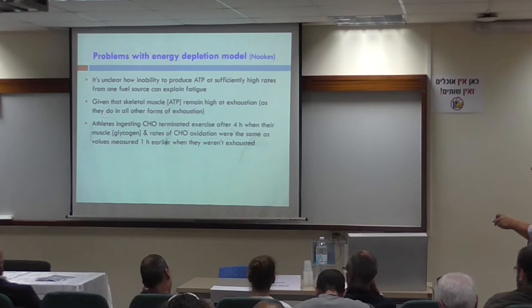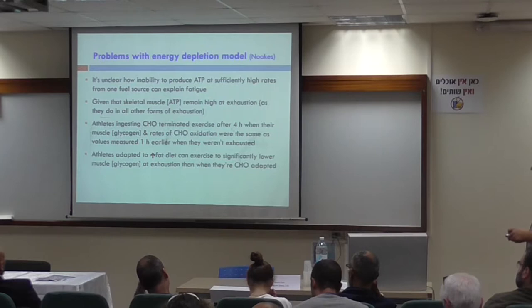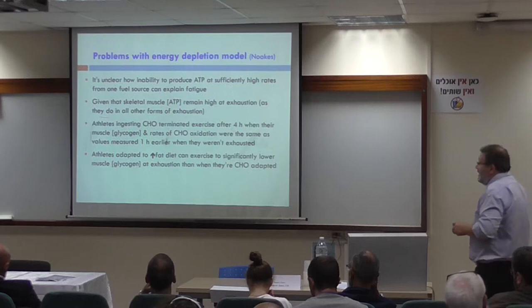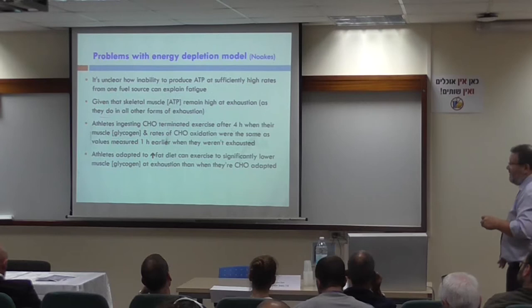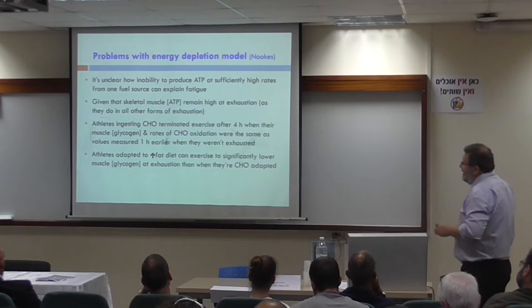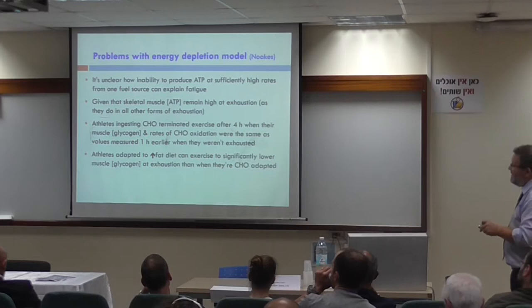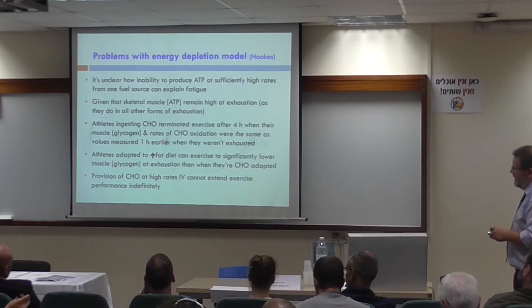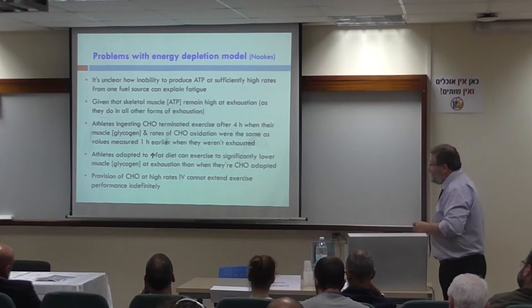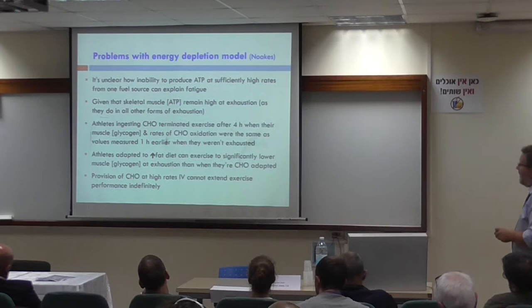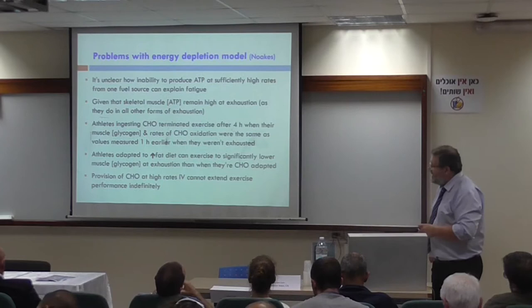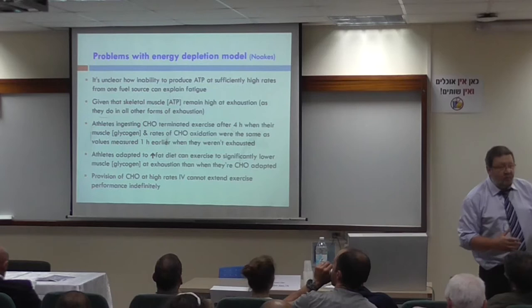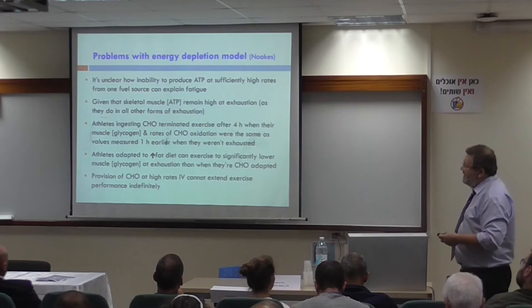Athletes adapted to a high-fat diet can exercise to significantly lower muscle glycogen levels before exhausting than those who are carbohydrate-adapted — different fatigue levels with different energy sources, incompatible with the depletion theory. Furthermore, providing intravenous carbohydrate at high rates during exercise was not able to extend exercise performance indefinitely. If the depletion theory were correct, supplying sufficient carbohydrate should prevent fatigue indefinitely — yet eventually everyone fatigues.